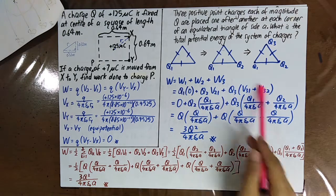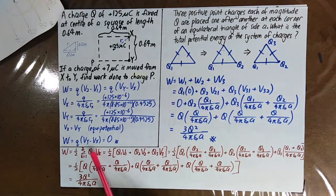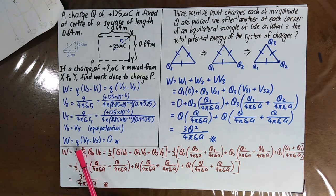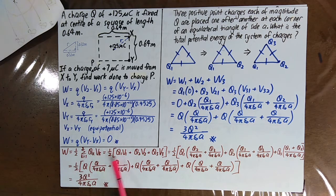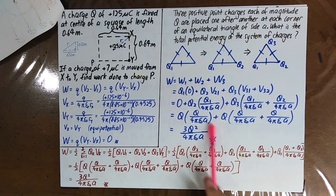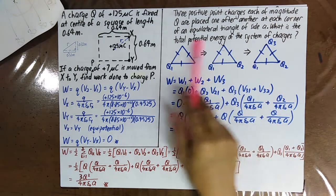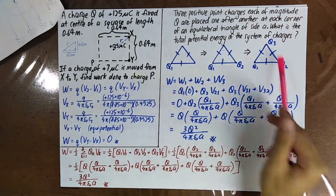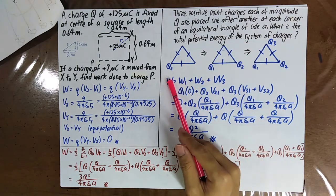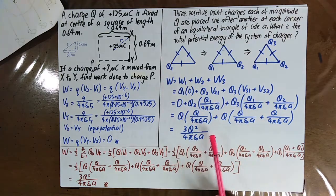Alternatively, you can use the formula W = ½ Σ qV, substitute everything in, and still get the same answer. It is recommended to try both methods so you have a way to check whether your answers are correct.